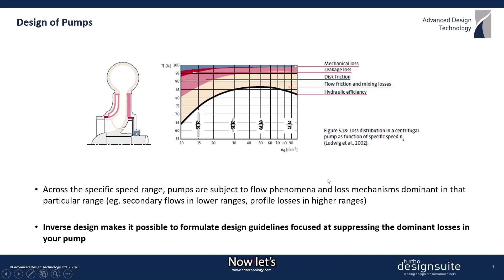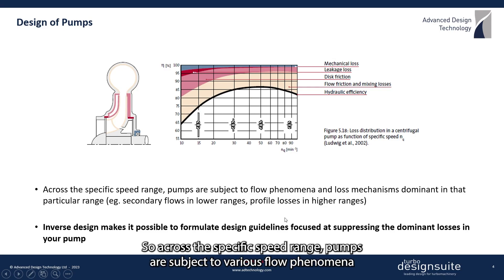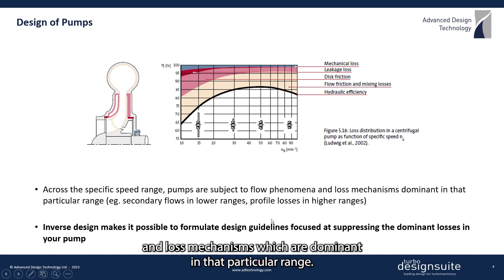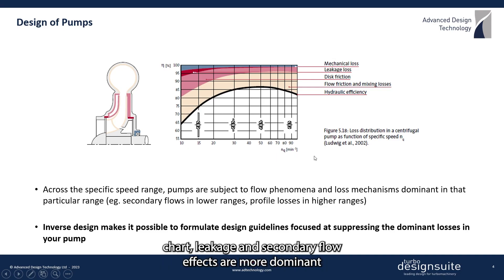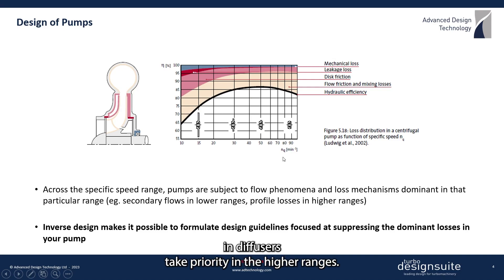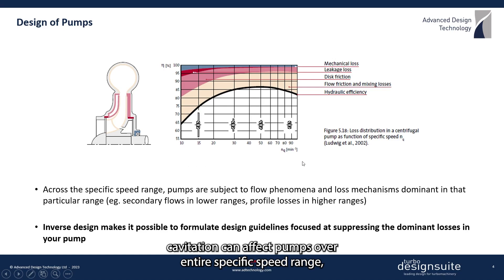Now let's look at the design of pumps in a bit more detail. Across the specific speed range, pumps are subject to various flow phenomena and loss mechanisms which are dominant in that particular range. As you can see in this specific speed chart, leakage and secondary flow effects are more dominant in the lower ranges, whereas profile losses and corner separation in diffusers take priority in the higher ranges. A phenomenon such as cavitation can affect pumps over the entire specific speed range, and this is something that must be dealt with on a case-by-case basis.